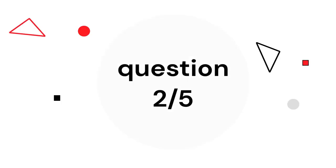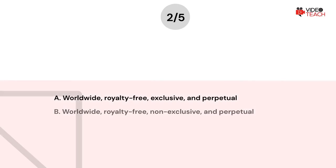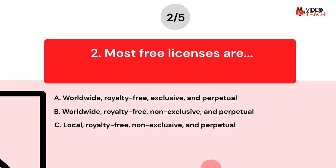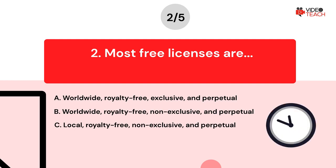Question number two. Most free licenses are — Option A: Worldwide, royalty-free, exclusive, and perpetual. Option B: Worldwide, royalty-free, non-exclusive, and perpetual. Option C: Local, royalty-free, non-exclusive, and perpetual. Now you have about 15 seconds to think about your answer.